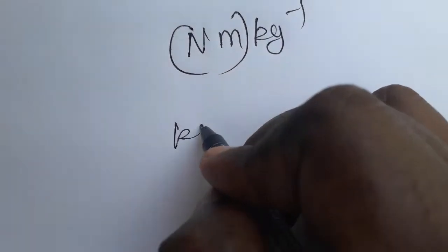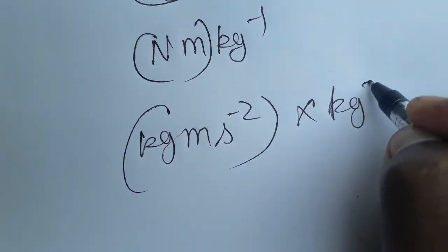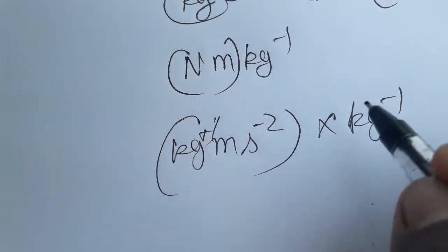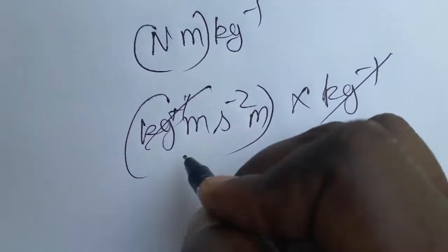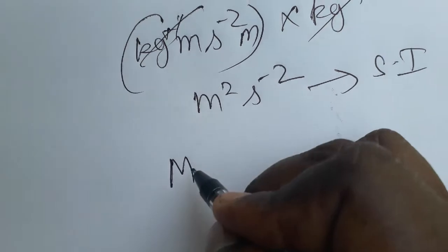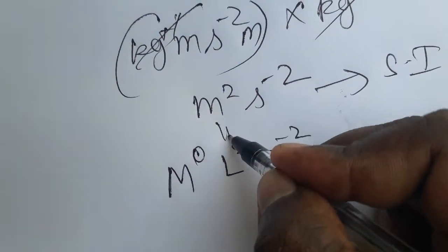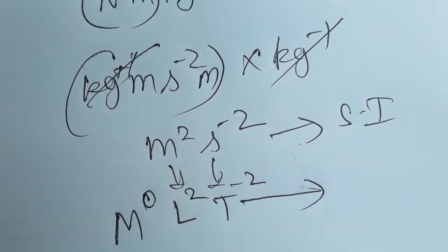Newton meter is kg meter second⁻² into kg inverse. So kg⁺¹ kg⁻¹ gets cancelled, and meter meter becomes meter square into second⁻². That's the SI unit. Dimensional formula: mass is not there, L² T⁻². L is length, T is time.